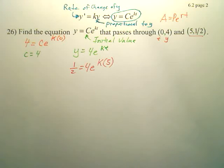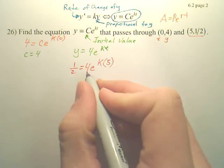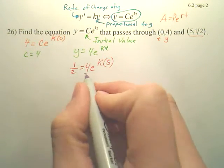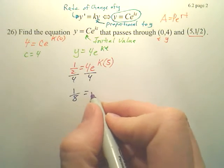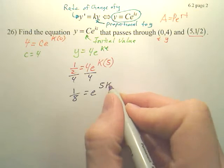So can we solve this for k? And then we have our equation. So first thing I'm going to do is divide by 4. So if I divide both sides by 4, I get 1/8 equals e^(5k).